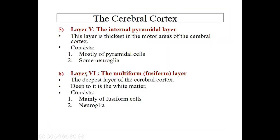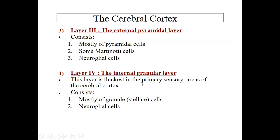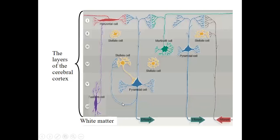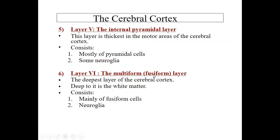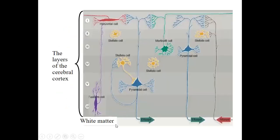Layer six, the multiform or fusiform layer, is the deepest layer of the cerebral cortex. The most prominent cell type here is the fusiform cell, which is vertically oriented. Deep to this layer, beneath it, is the white matter.